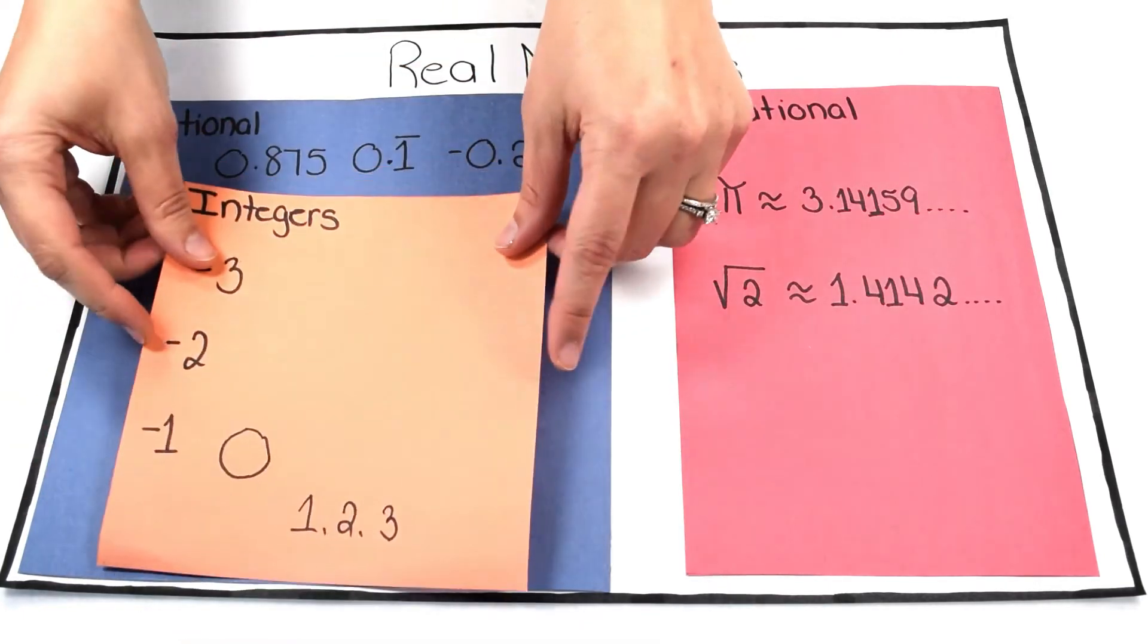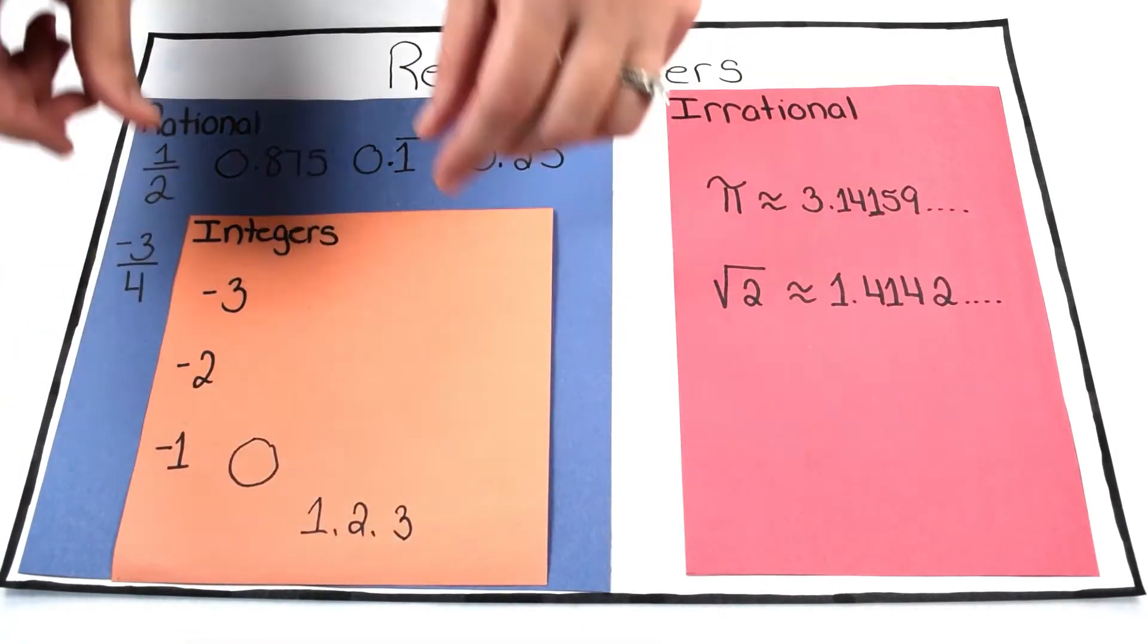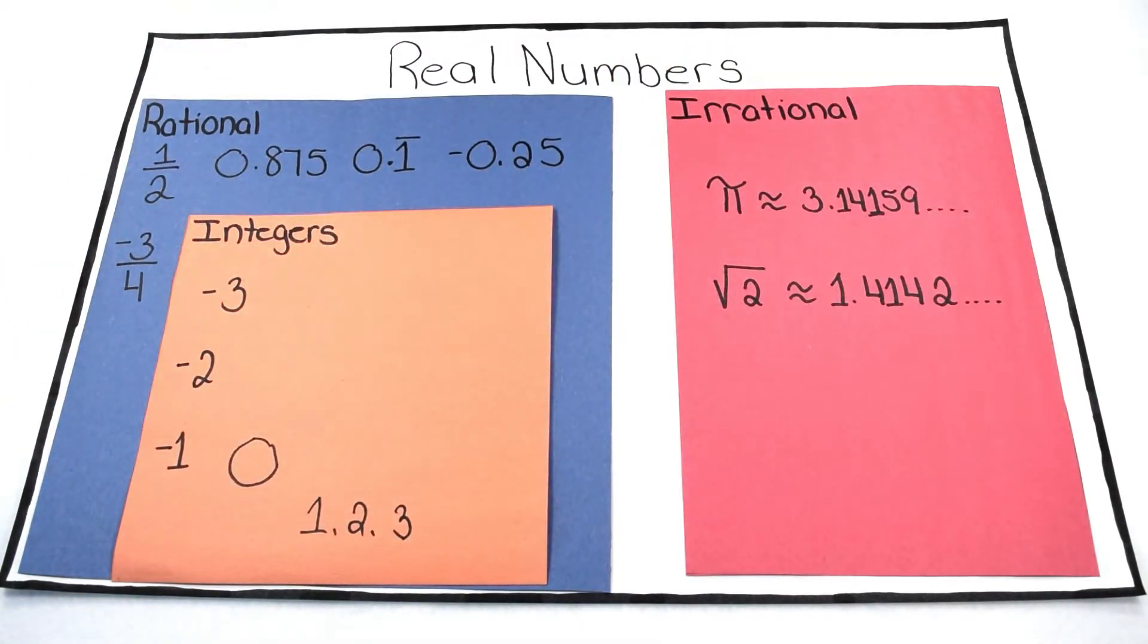Coming back to rational numbers, we can break this down further into other subcategories. Within rational numbers, we have integers. This group is made up of positive and negative whole numbers, including zero.